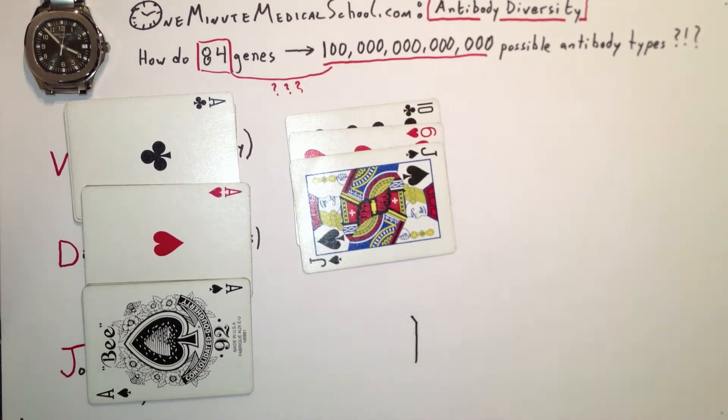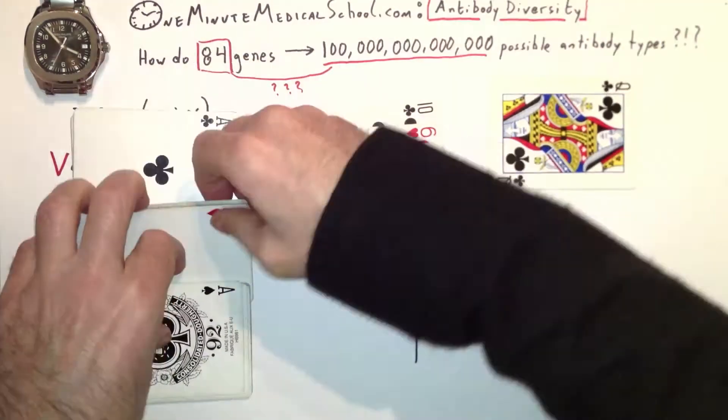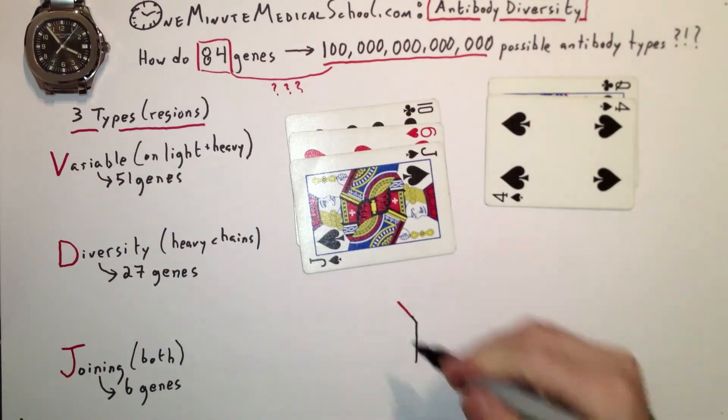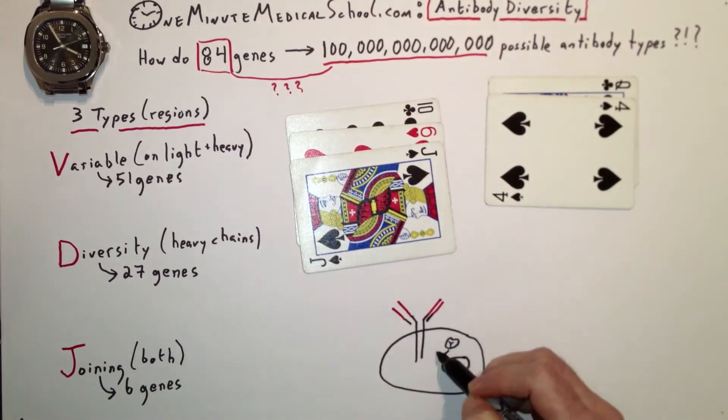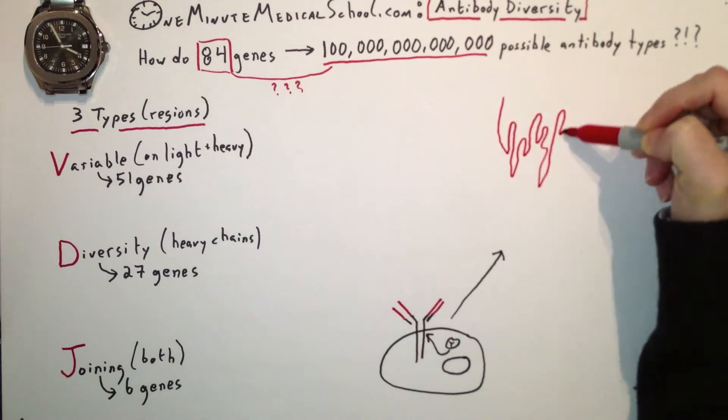Then you have another 51 times 6. These all multiply together, and then there's further modifications in the cell before the antibody protein is made.